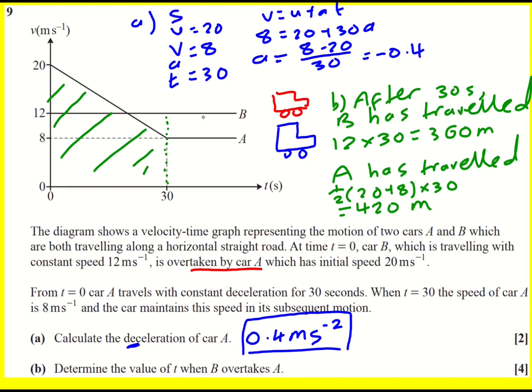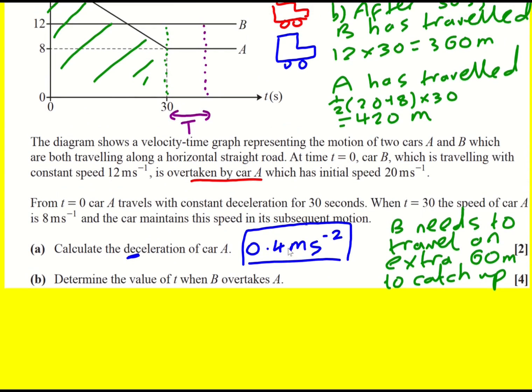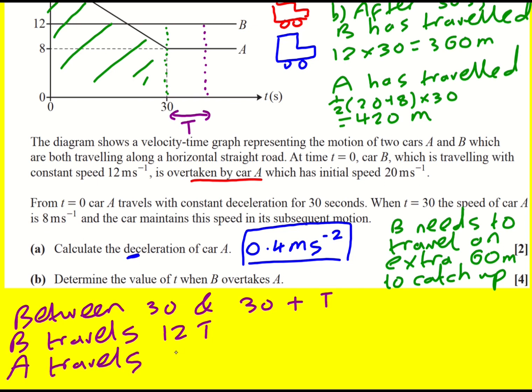That means that B is going to have to go an extra 60 meters to catch up. And we'll call this time interval capital T. I can just work in terms of that. So between 30 and 30 plus T, B travels 12T and A travels 8T.